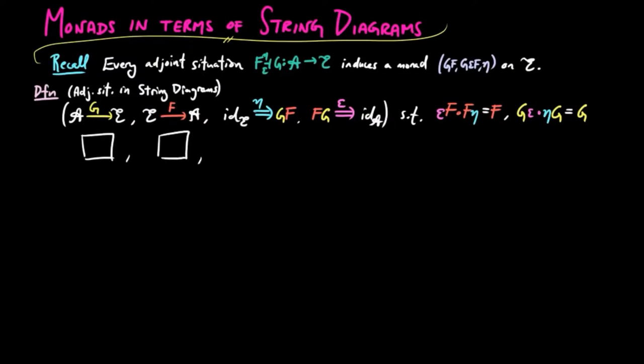In string diagrams, we have the adjoint as the yellow string, the red string as the coadjoint, the unit as the light blue dot, and the co-unit as the pink dot. And these diagrams satisfy the following triangle identities corresponding to the identities above.